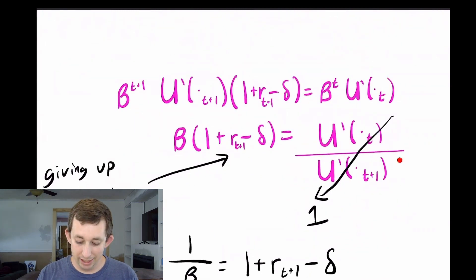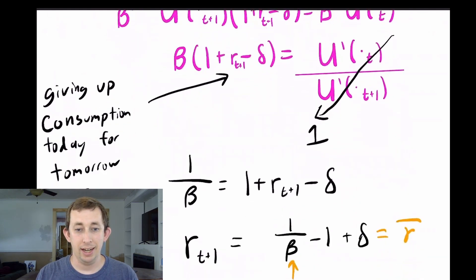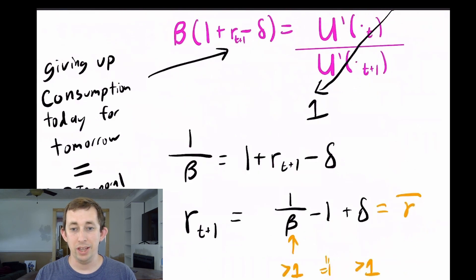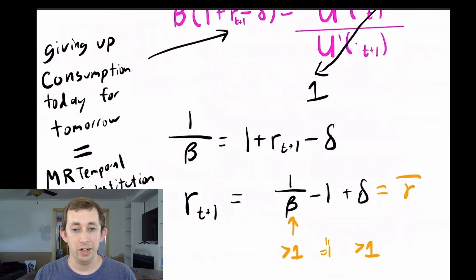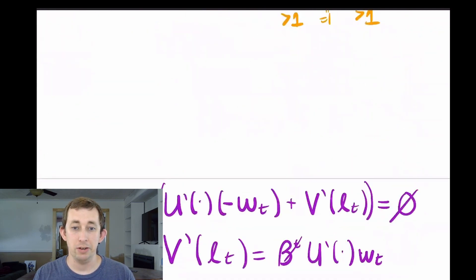So here is that assumption being applied. The marginal utility of stuff today and marginal utility of stuff tomorrow should be the same. So that means I can solve for R bar or the equilibrium long run real interest rate in this economy, which I get as one over beta minus one plus depreciation, which I know is going to be greater than one.